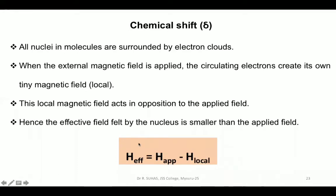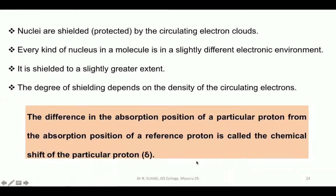The equation is: H effective equals H applied minus H local, where H represents magnetic field. The effective magnetic field felt by this nucleus is the difference of the applied magnetic field and the local magnetic field.